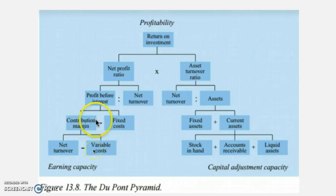If we look at net turnover — which we also call revenue — if you subtract the variable cost, you get the contribution margin. From the contribution margin, if you subtract the fixed costs, you get the profit before interest. Profit before interest is essential because here we have paid for all the costs in relation to production, or if we are a retail store, all the costs in relation to getting our goods. Then afterwards you subtract the fixed costs — salaries, buildings, etc.